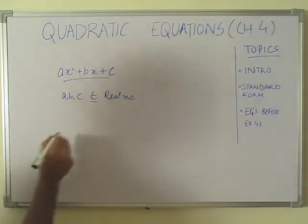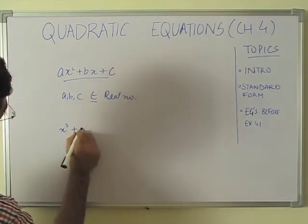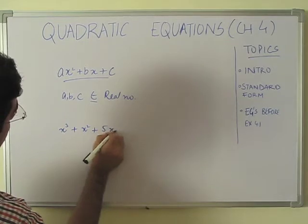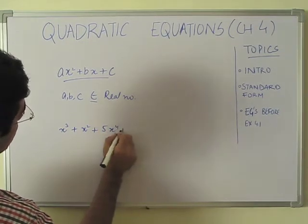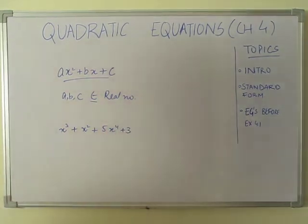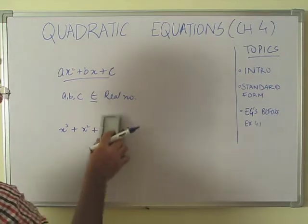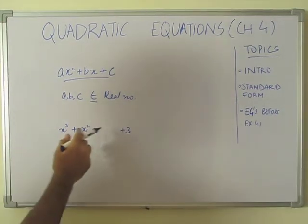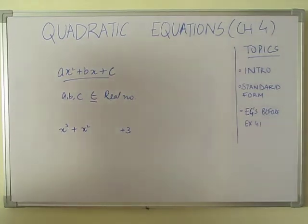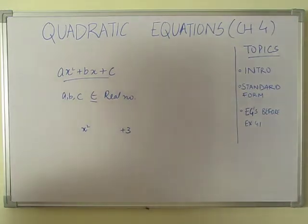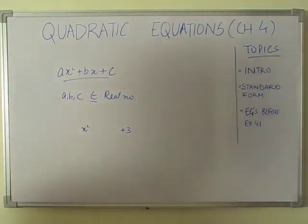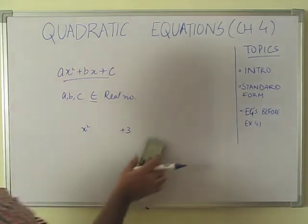Let's see an example. If we have x³ plus x² plus 5x to the power 4 plus 3, this is not a quadratic polynomial because the highest power is 4. And x³ plus x² plus 3 is not quadratic because of x³. But x² plus 3 is quadratic — highest power is 2, b value is 0, c value is 3, and a value is 1. So this is a quadratic polynomial.